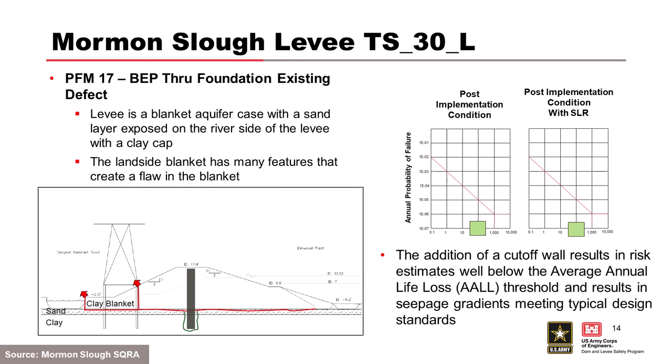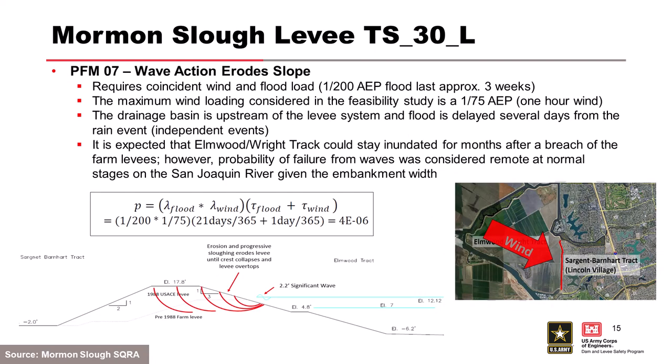With the cutoff wall in place, the failure mode now requires either a defect in the wall or piping through the clays around the wall ends — but we've killed the gradient, so probability of initiation and continuation drops very low. Those failure modes maintain high life loss estimates but fall to the bottom of the FN chart. The other failure mode considered was wave action eroding the slope — an overwash failure mode. Typically we look at overwash when there's armoring on the water side, but this levee has no erosion protection on any side.